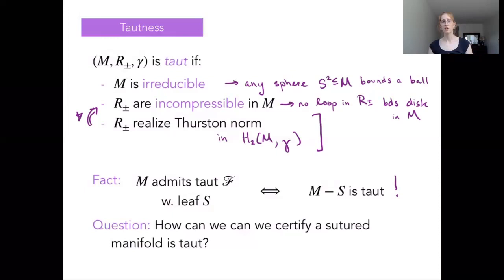So this prompts really the motivational question that I want to raise and address in the second part of this talk, which is, okay, we now have this much more topological hands-on property about a manifold that we can try to study to answer your question about the existence or non-existence of a particular taut foliation. So this question is how can we certify that a sutured manifold is taut? How can I give a condition to say these boundary subsurfaces do in fact realize the Thurston norm? We'll come back to that in part two of this talk. Thank you.